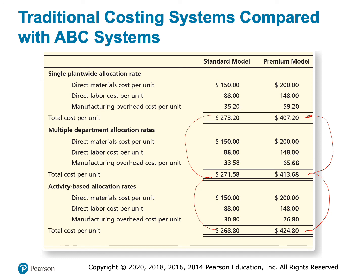By using activity-based costing, I'm getting a more accurate cost per unit, which I can use to adjust my accounting numbers and get better profit estimates. I could also use these to adjust my selling price. If I'm using cost-plus pricing, I was setting the selling price of the standard model too high — based on $273 instead of $269 — so I can lower that price a little, which may increase demand, since for normal goods when price drops, demand increases. For the premium model, I was under-costing it based on $407 instead of $425, so I really need to increase the price of the premium model, or at least consider it.